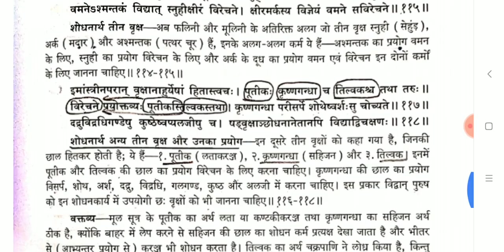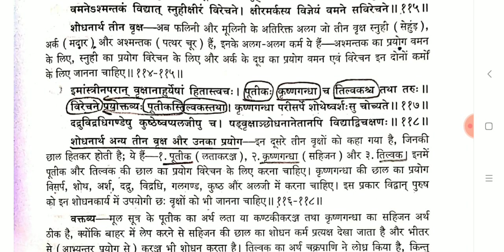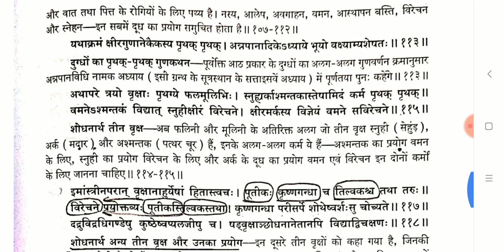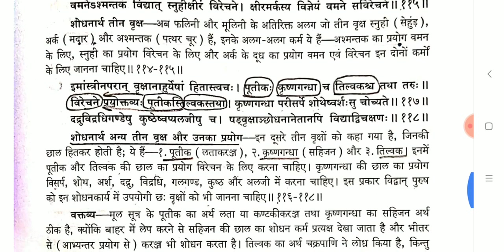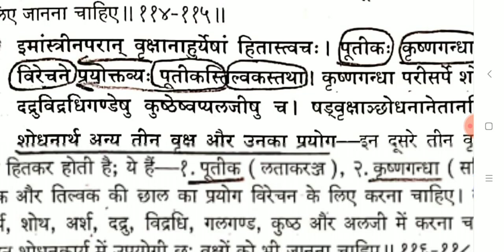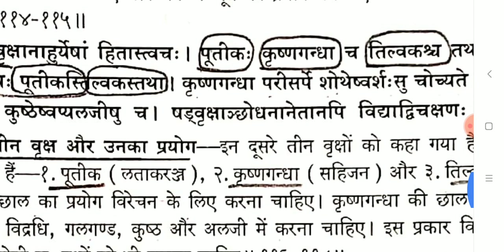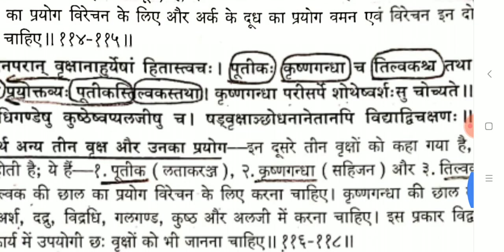Shodhanartha Dravyas — the six Shodhanartha Vrikshas are: Putika, Krishnakandha, Tilvaka, Snuhi, Arka and Ashmantaka. Remember this one. Their specific uses: for example, Putika and Tilvaka are used in Virechana.